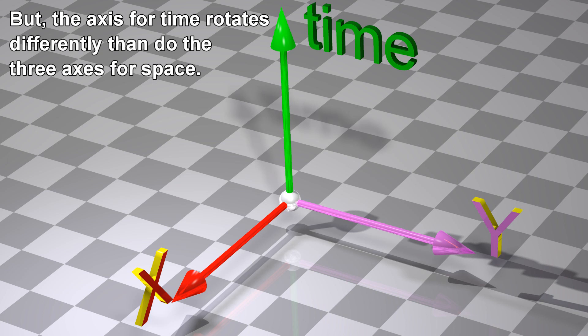But the axis for time rotates differently than do the three axes for space.